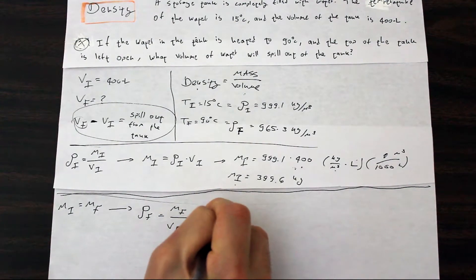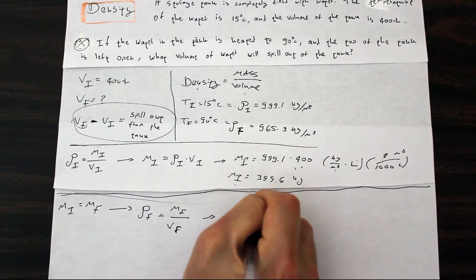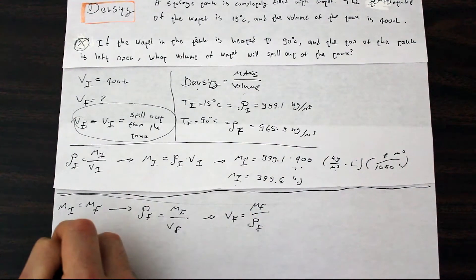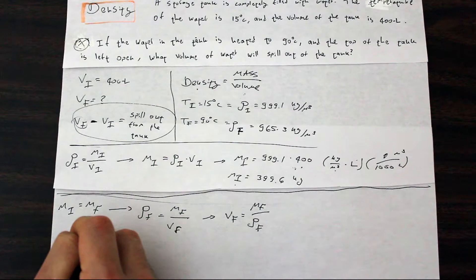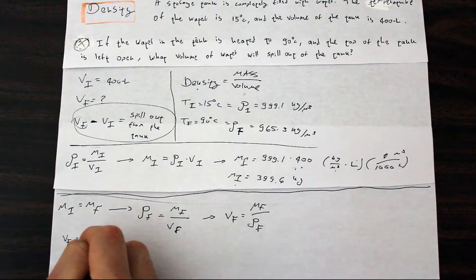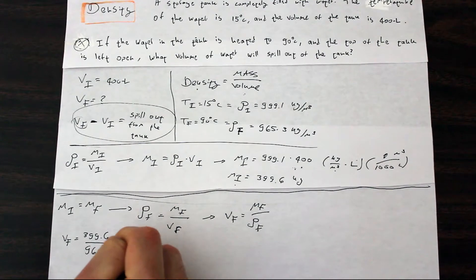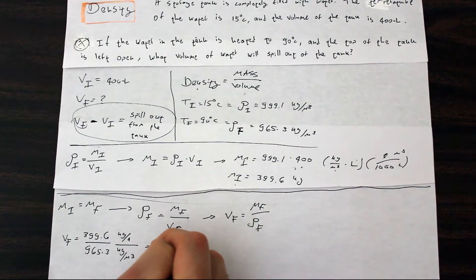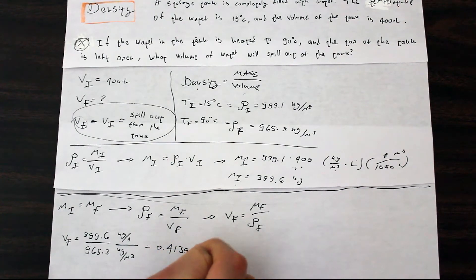Changing the equation a little bit, we could say that the final volume is equal to the final mass over the final density. Using numbers, plugging in the numbers that we know, we get the final volume is equal to 399.6 over 965.3 kilograms over 1 over kilograms over meter cubed. So, our unit cancels correctly. And we get 0.41396 meter cubed.